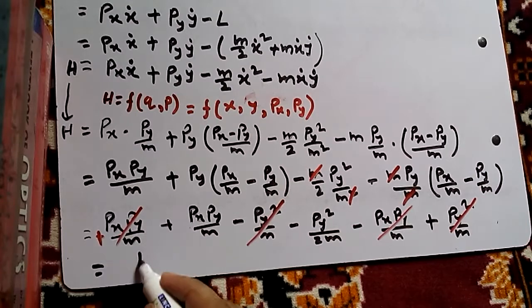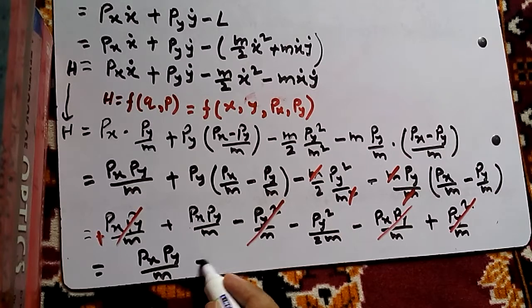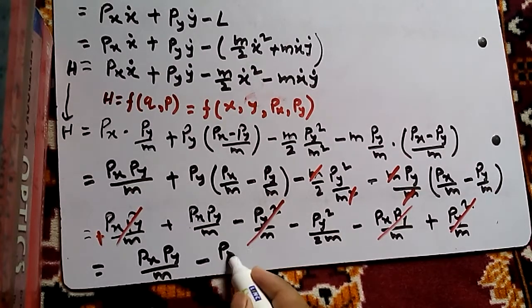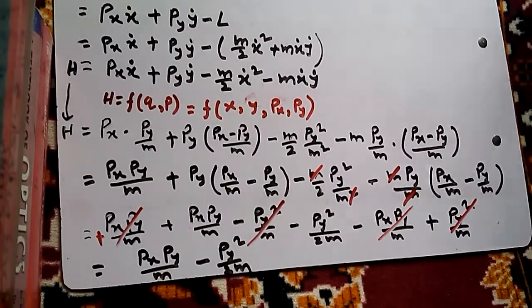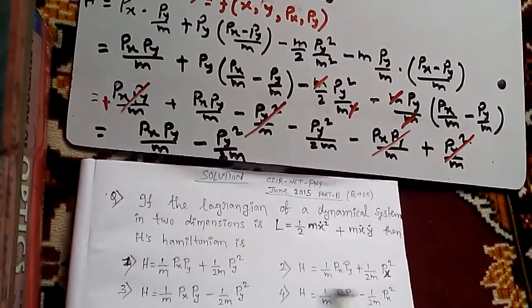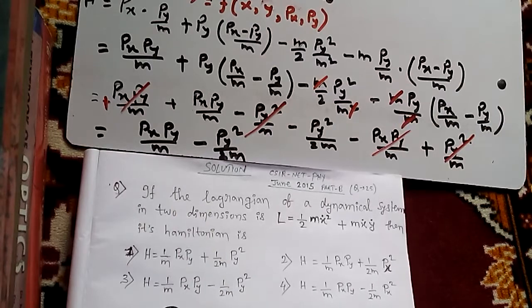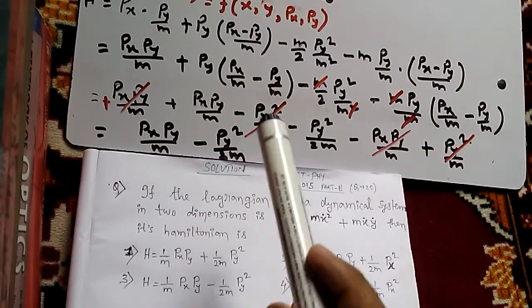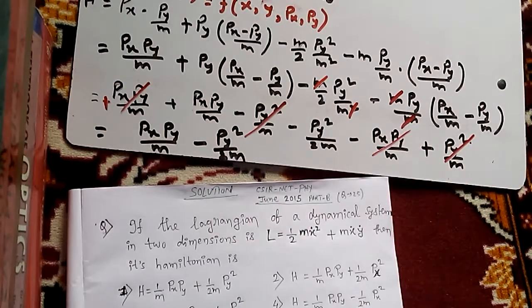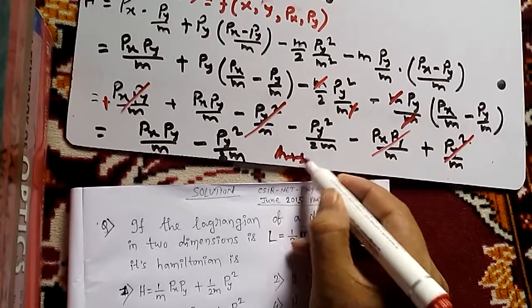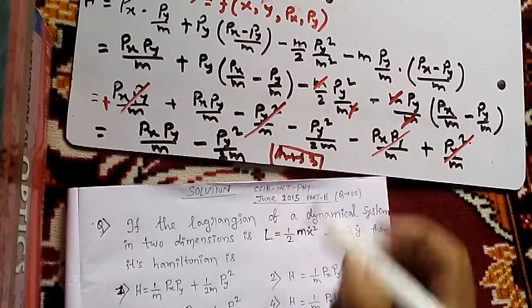Finally, the Hamiltonian is H equals Px Py/m minus Py squared/2m. This matches option 3 among the given choices. So the answer is option 3. Thank you.